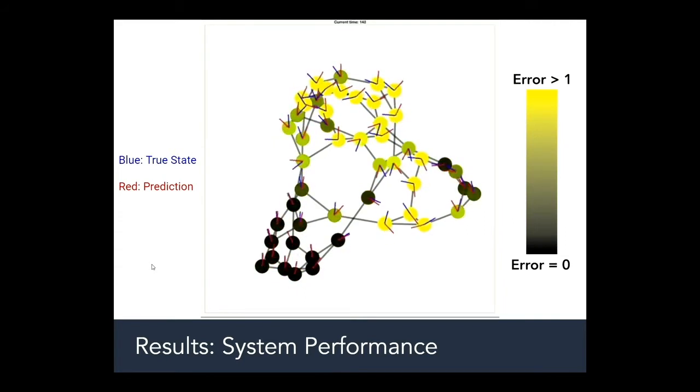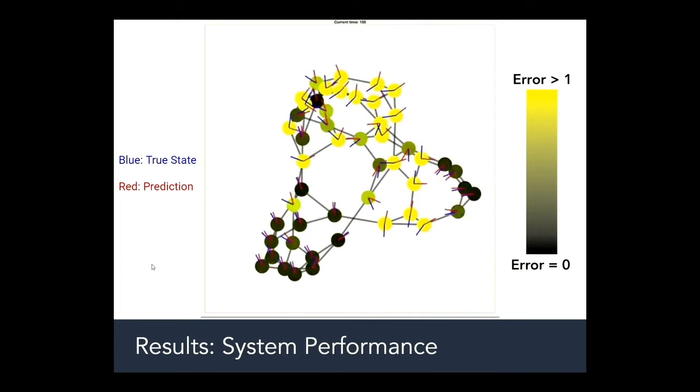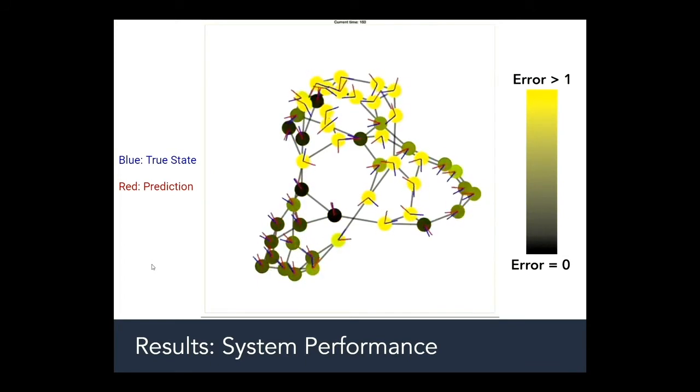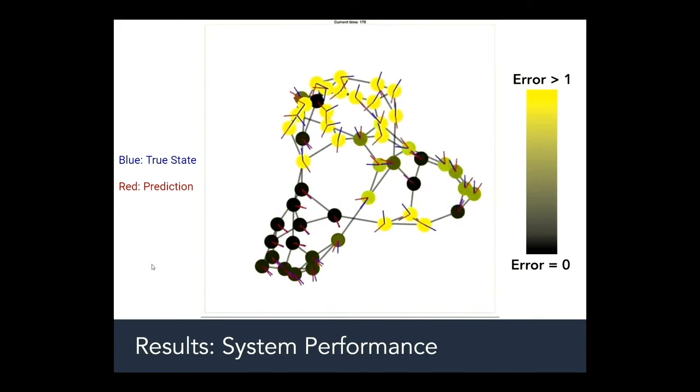But even when the angles are wrong you can see they still rotate with approximately the same frequency. Contrast the nodes down here which have a higher frequency and thus predict better and stay more in sync with how it's supposed to look.